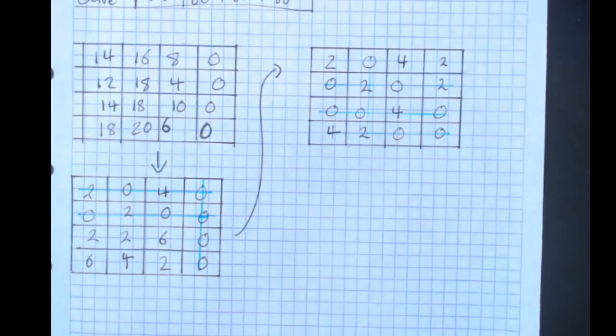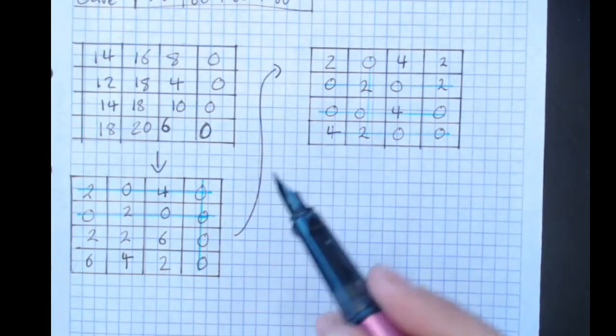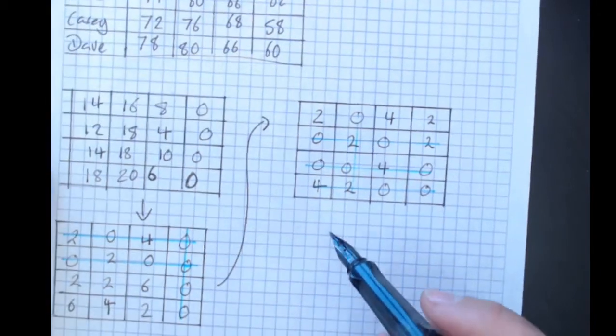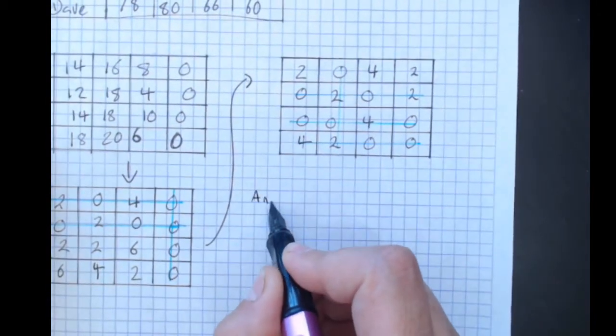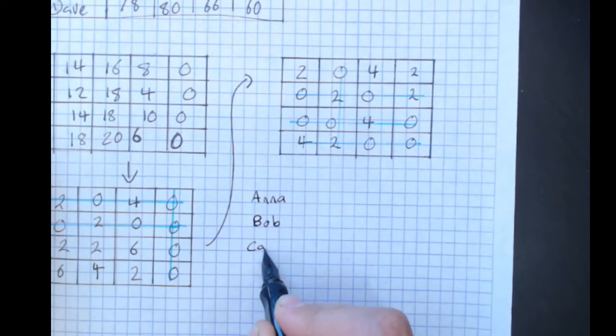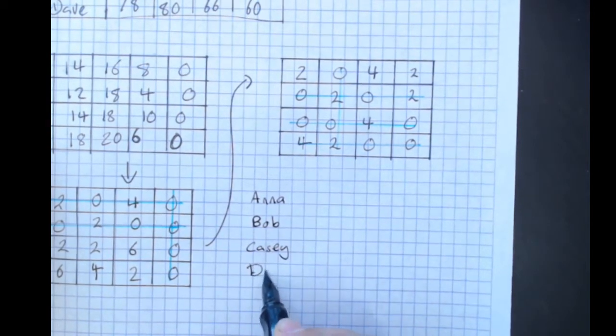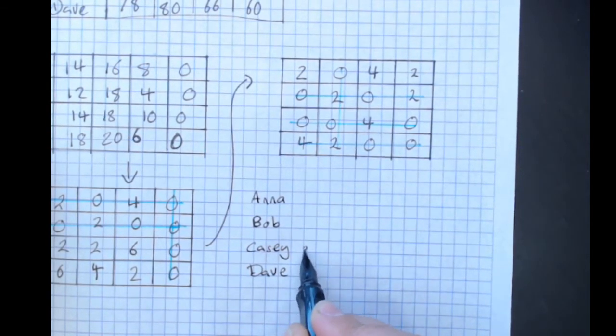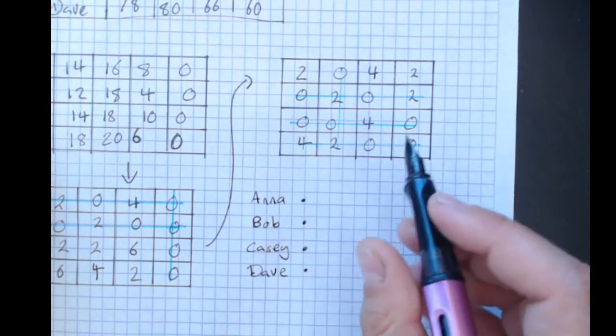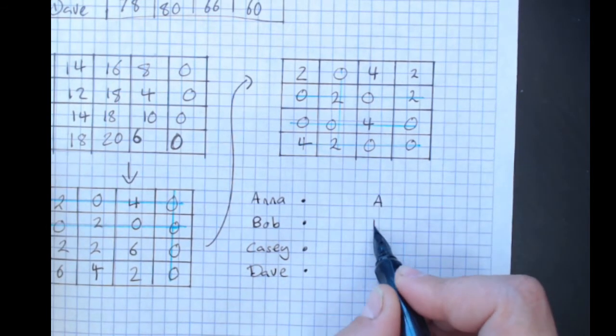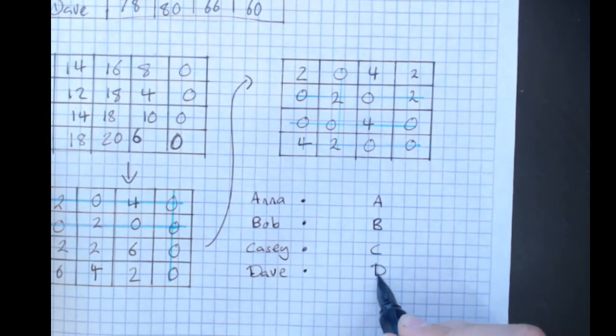Then I make my bipartite graph. So we had Anna, Bob, Casey, Dave. Give them each a vertex. And we had task A, B, C and D.